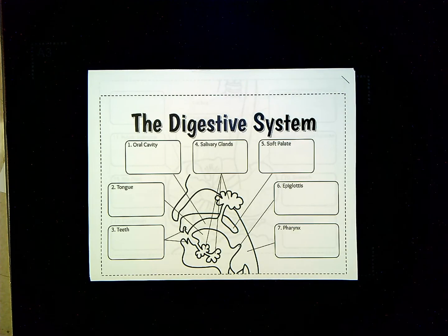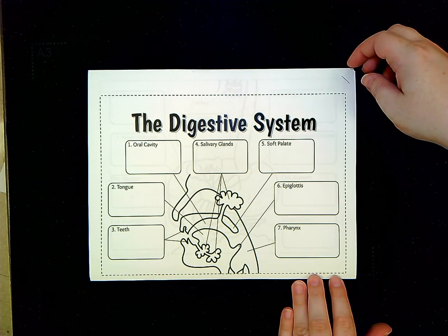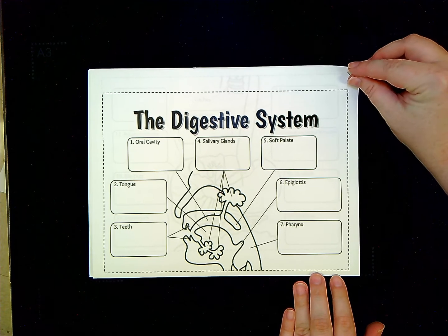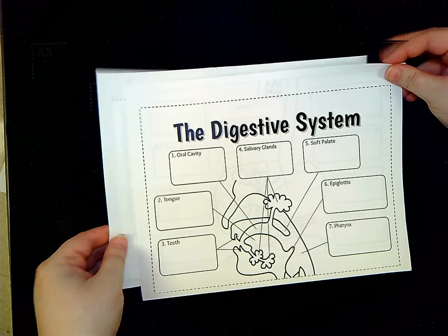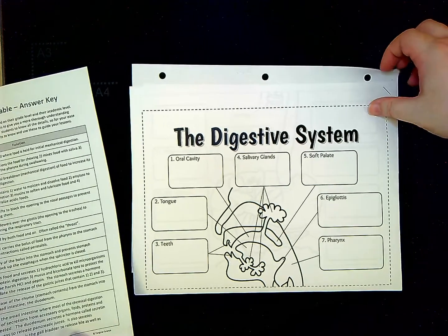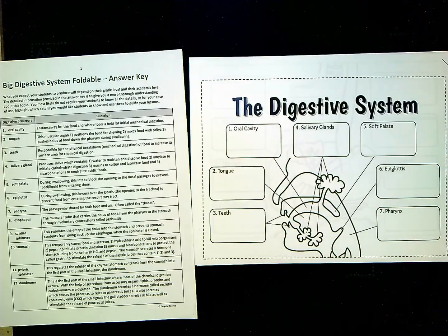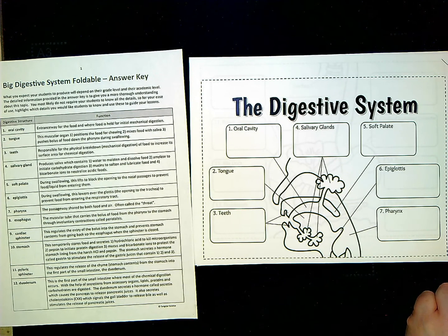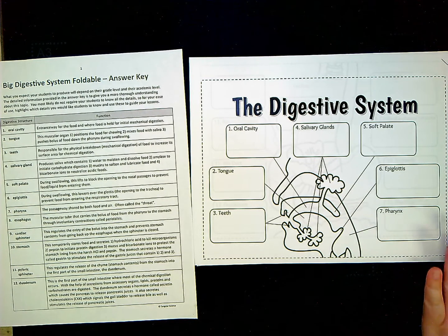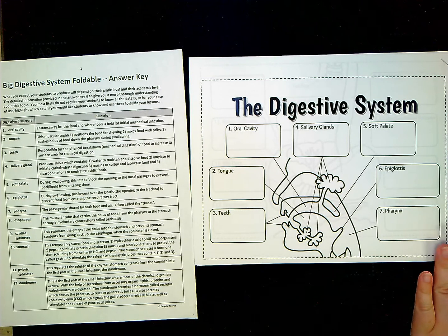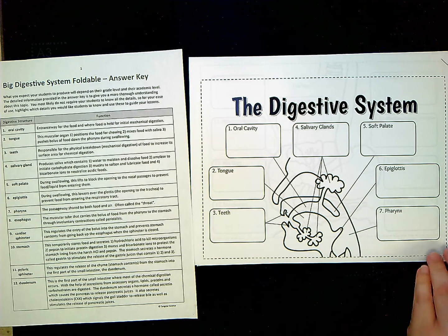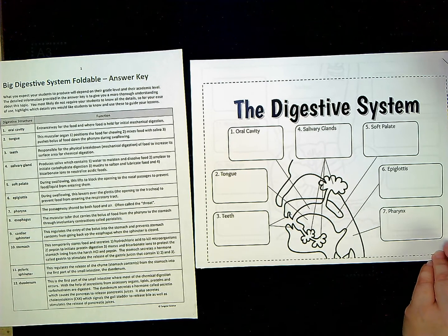When students met in person, I gave you a copy of this digestive system paper along with the digestive system foldable answer key. The first thing you're going to need to do is tape and cut out your digestive system model to look like the sample here.